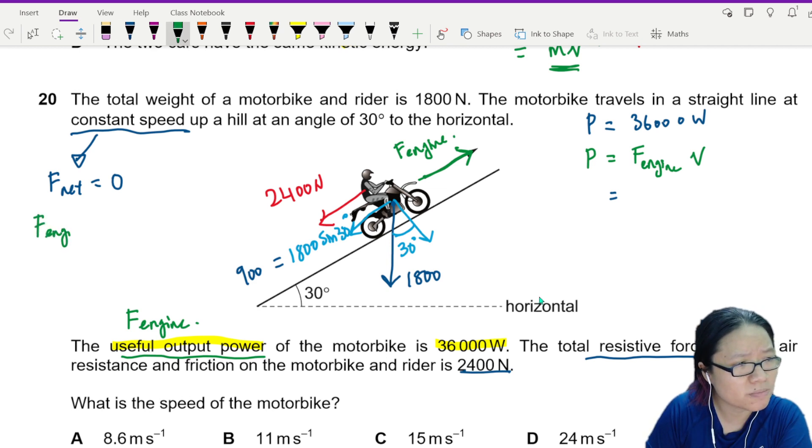The force of your engine must be equal to the downward forces. Because why? Net force is zero. So 2400 plus 900, and this will give me 3300.